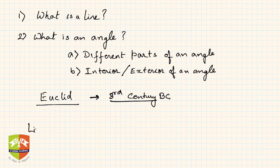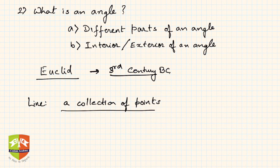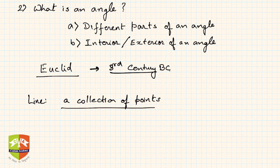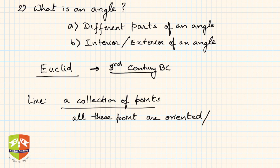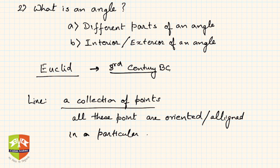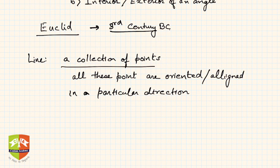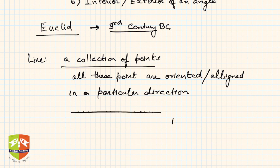So how do we define a line? A line is a collection of points — but not just any random collection of points. There is a pattern: all these points are oriented in one particular direction. So if you take points and plot them moving in one particular direction and join all of them, that becomes an example of a line.